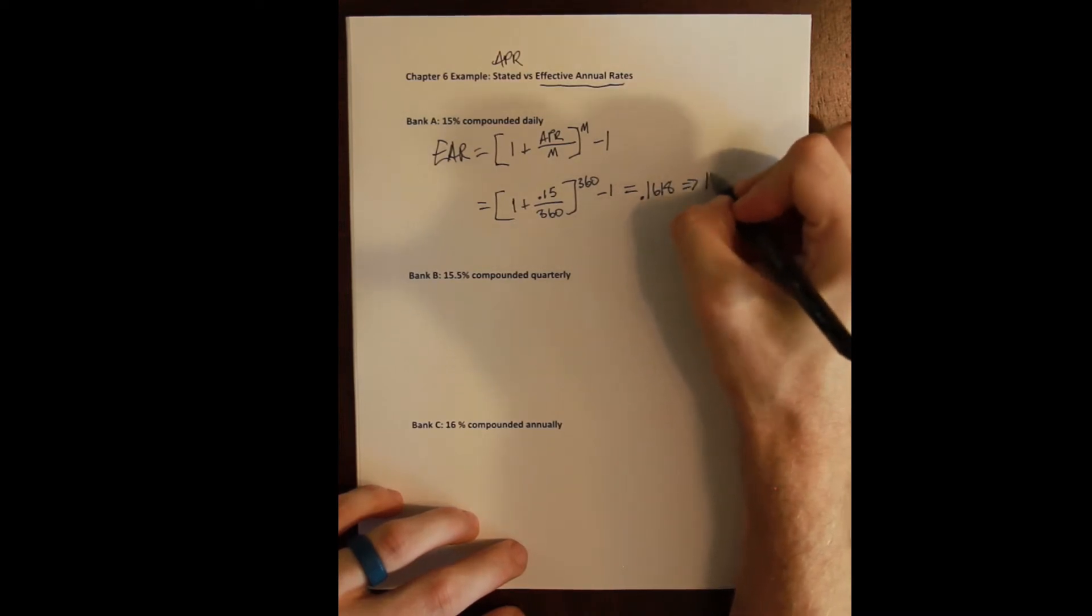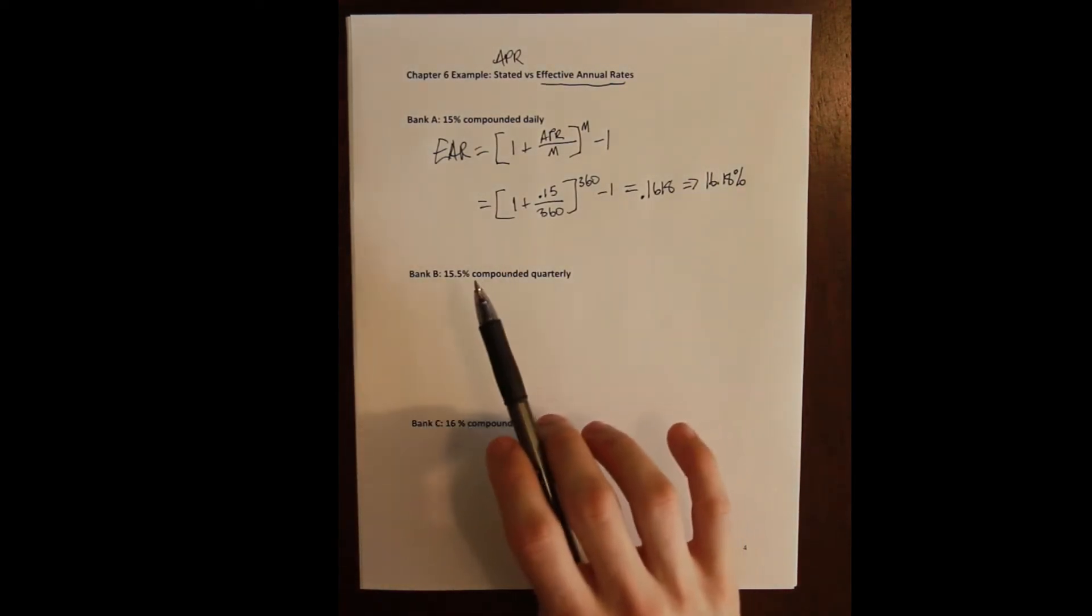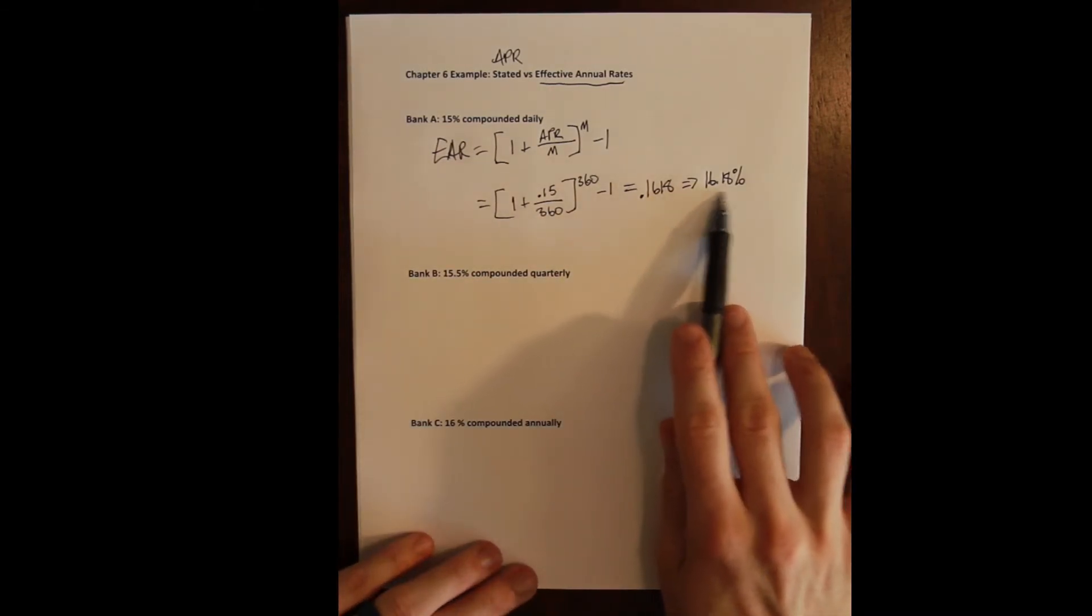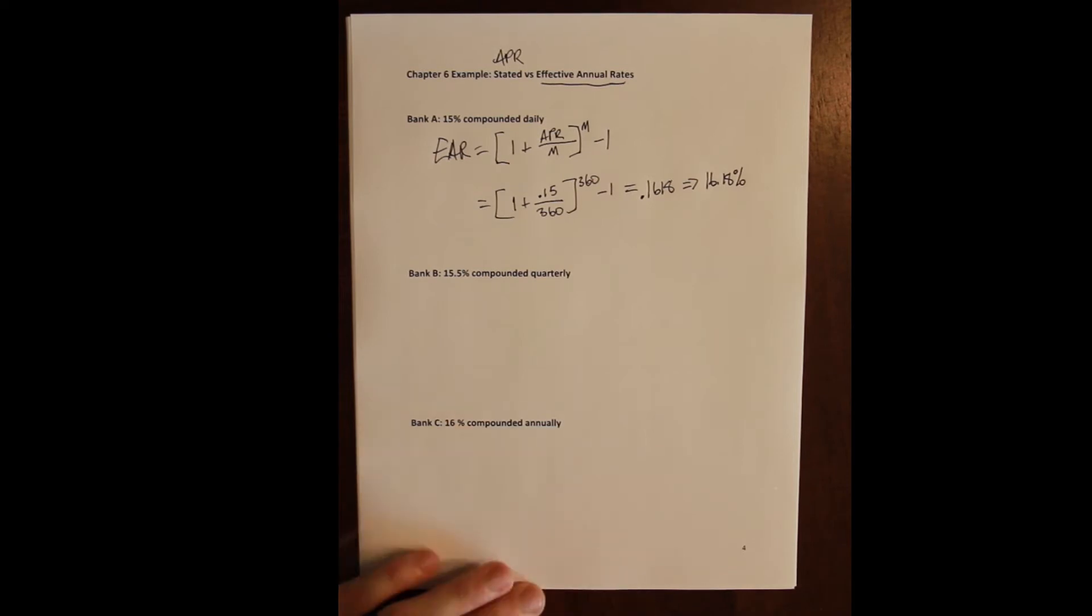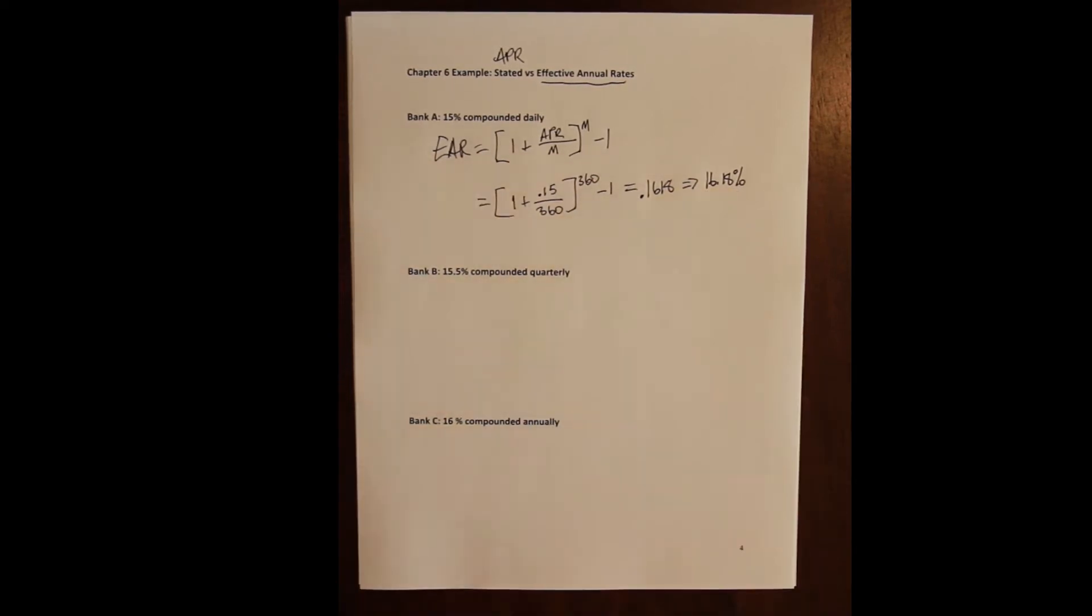You get 0.1618 or 16.18%. We can see that because of daily compounding, that 15% rate written in the contract is effectively a 16.18% annual rate. Already we know this is a worse loan; we're going to pay higher interest than this one because this is telling us straight up we're paying 16% annually.